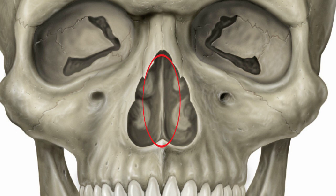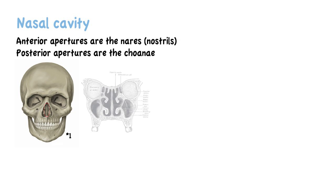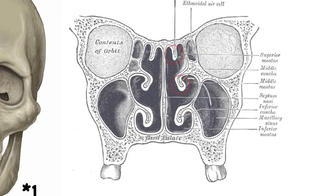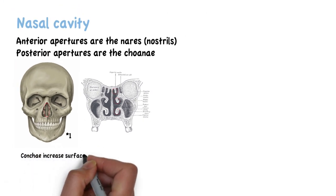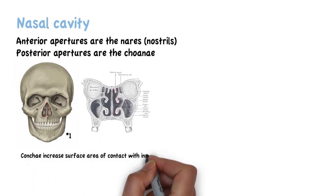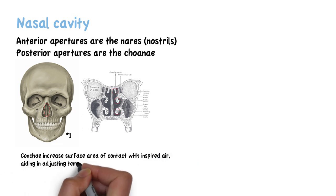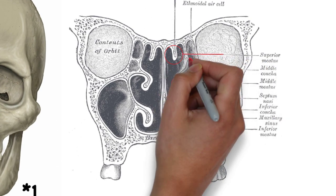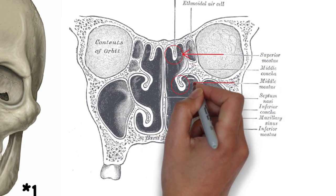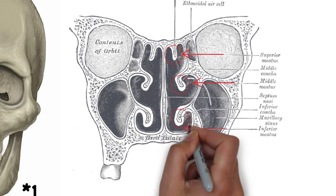If we cut a bit of bone in front of the nose, we then have this image. Each side of the cavity has three conchaes, or turbinates — the superior, middle, and inferior turbinates. These protrude into the nasal cavity and increase the surface area of contact with the respired air, aiding in adjusting the temperature and humidity before it reaches the lungs. The nasal meatuses are the spaces behind each concha, so we have the superior, middle, and inferior meatuses.